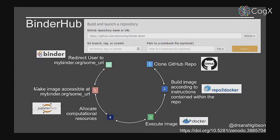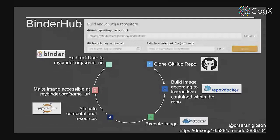We use Docker to execute this image, and then we have a JupyterHub sitting on top of the Kubernetes cluster underlying a lot of the technology. JupyterHub allocates computational resources from our Kubernetes cluster to the running Docker container and makes that container accessible at some URL. Binder can be thought of as a thin layer across the top of all of these technologies, handling URL resolution and redirecting the user's browser to that computational environment.